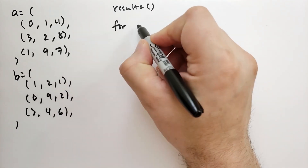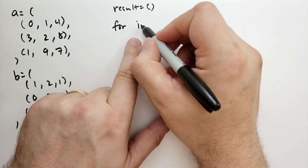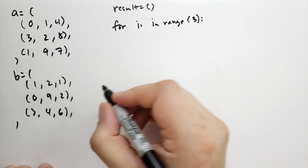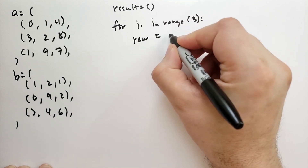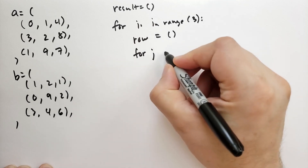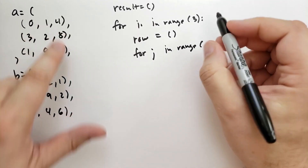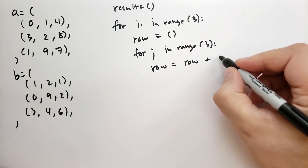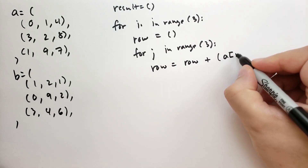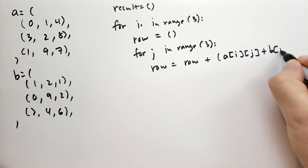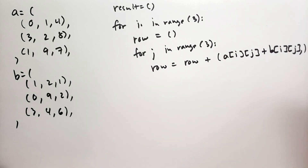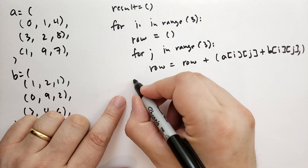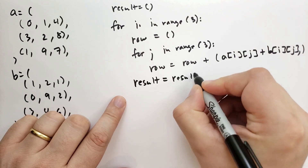We iterate first through the rows using index i. For each i, we start building a new row. Then we iterate across j for each cell in that row. We extend the row by adding a new single-item tuple containing a[i][j] plus b[i][j]. After building up each row, we extend the result by adding that row tuple on.